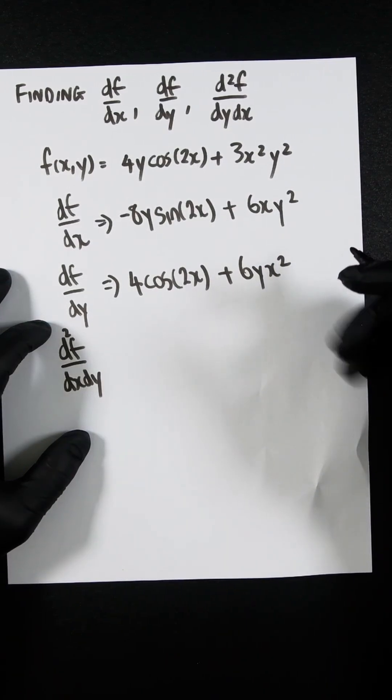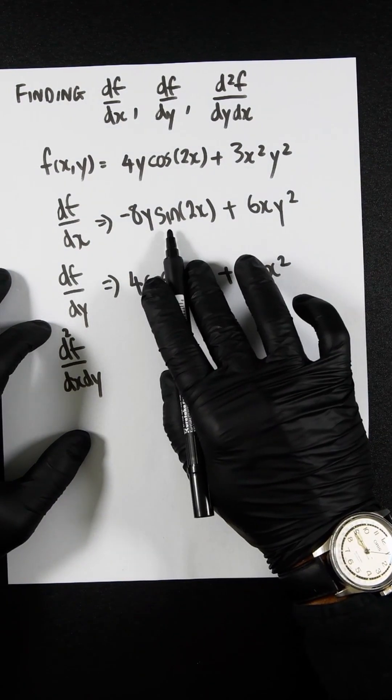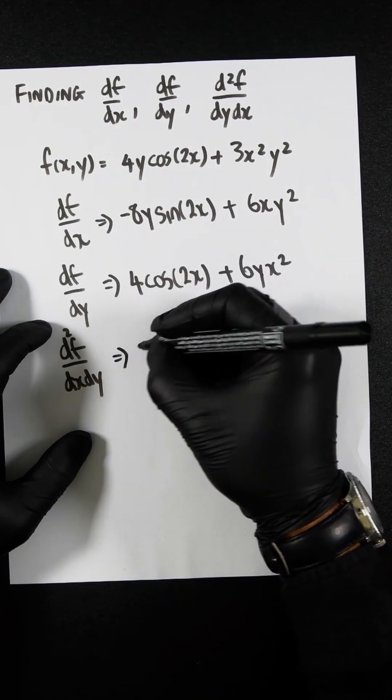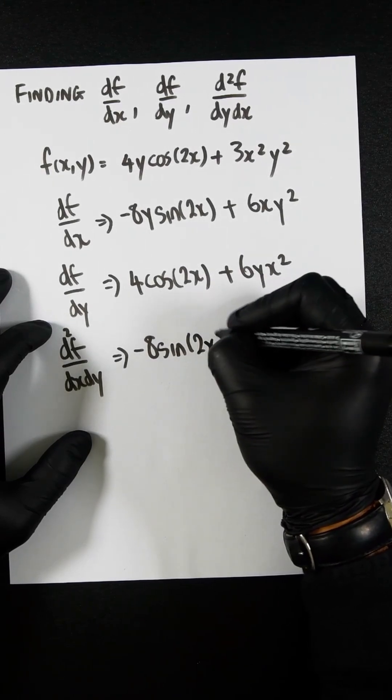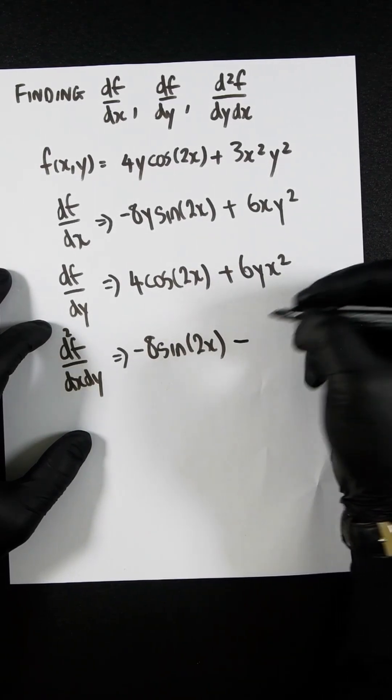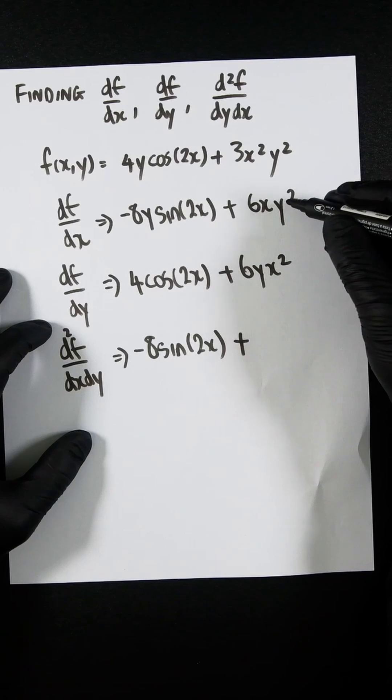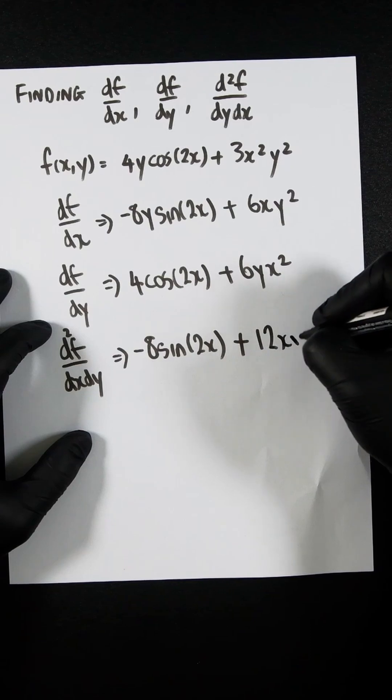So from this, we're just going to look at the y terms, which is 8y and minus 8y, and leave this as a constant. So that's going to be minus 8 sin 2x. And then we look at the y term here, which is going to be 2y. So 2y times 6x is 12xy.